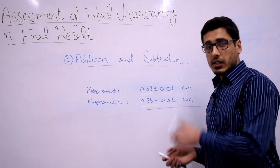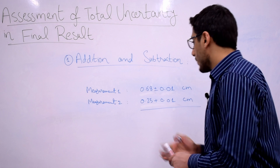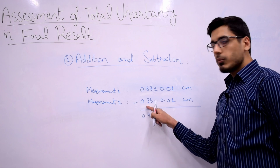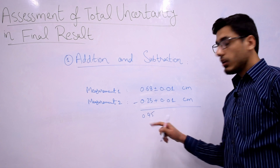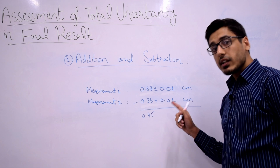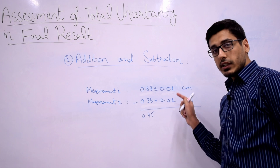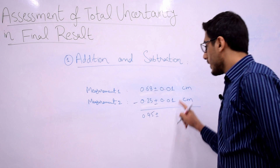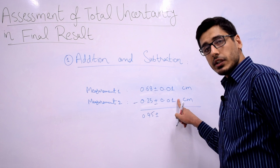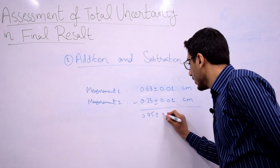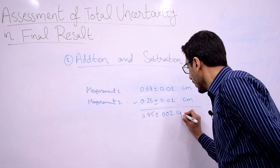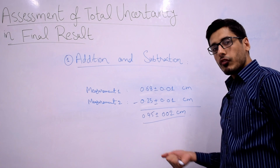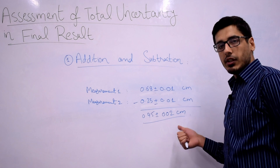Let's subtract these measurements. If I subtract 0.23 from 0.68, I get 0.45 cm. For the uncertainty, the absolute uncertainties are added: 0.01 + 0.01 = 0.02. So my final result is 0.45 ± 0.02 cm.